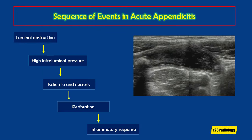When the lumen of the appendix is obstructed, the appendiceal mucosa keeps secreting mucus, causing dilatation of the lumen, which has consequences for its vascular supply. The intraluminal pressure exceeds the arterial pressure in the appendix wall, with subsequent ischemia and necrosis of the wall, and further perforation. This is the sequence of events in acute appendicitis: luminal obstruction, high intraluminal pressure, ischemia and necrosis, perforation, and inflammatory response.